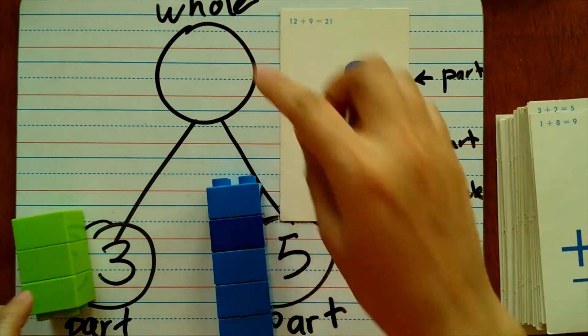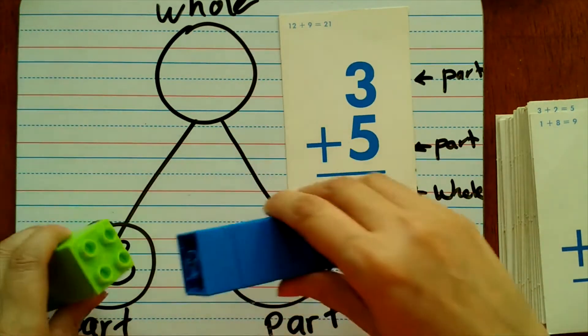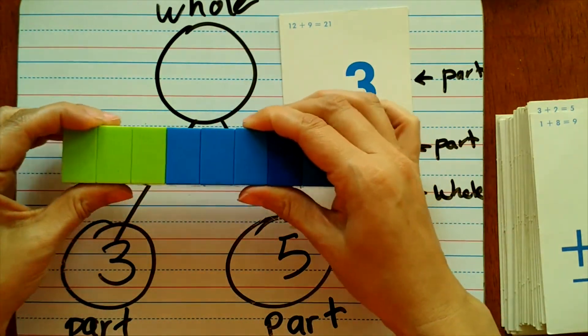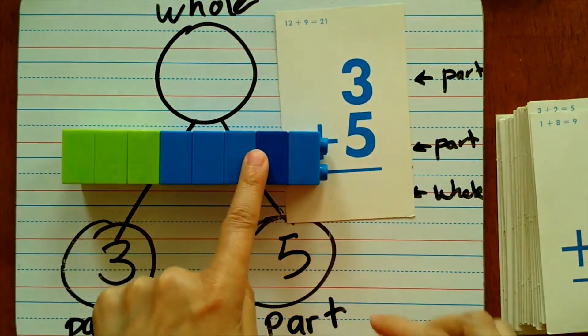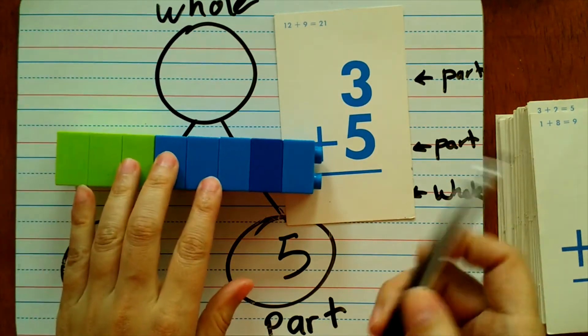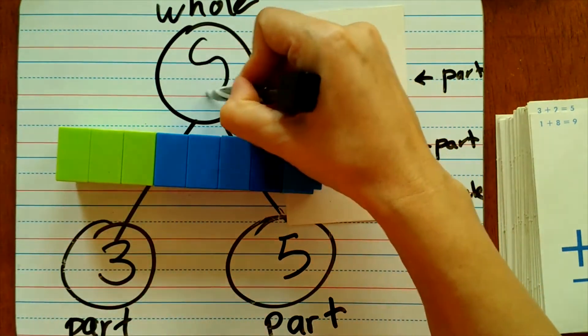And then to make your whole, you bring both of your manipulatives together because three and five equals eight.